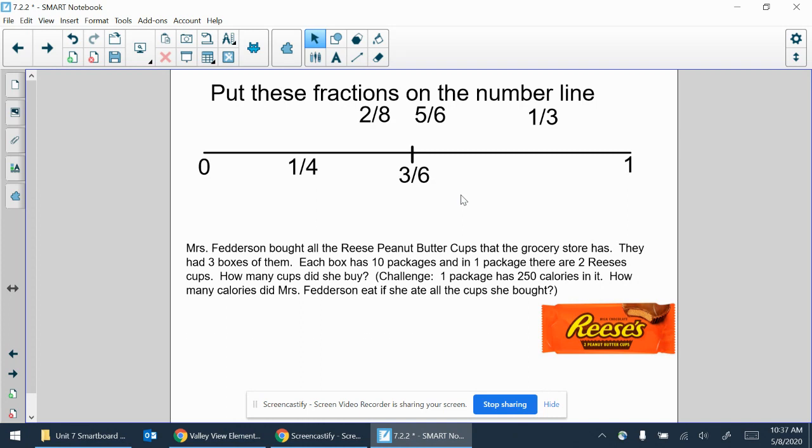Now looking at this, I see two eighths. So if this was cut into eight pieces, I would need two of them. And I know one eighth is half of that. So this is an equivalent fraction to one fourth. Those two are at the same spot.